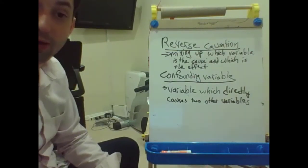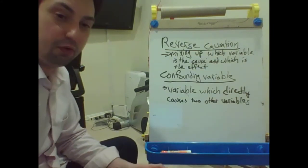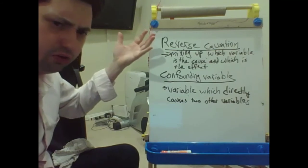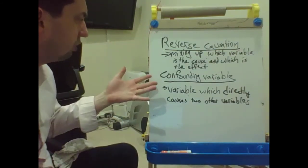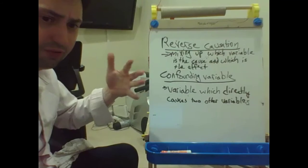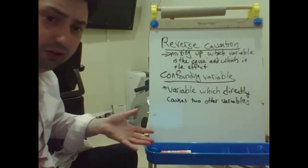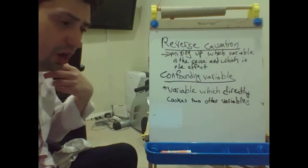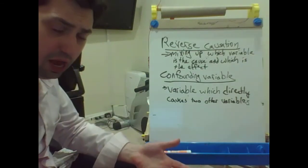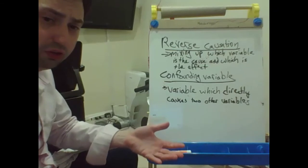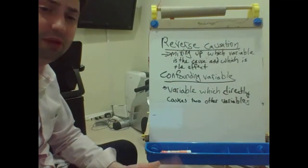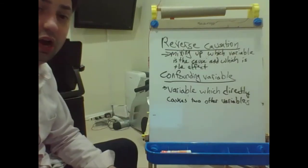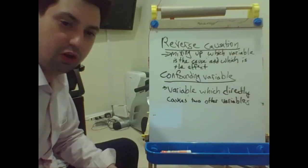Confounding variables are actually much more common than reverse causation. With reverse causation, you can just imagine what if one thing is causing the other and vice versa. But a confounding variable is trickier to detect because you have to think of the third thing that isn't listed. Think about what other things could cause X, and could those things also independently be causing Y.